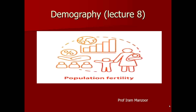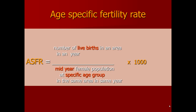Age-specific fertility rates are calculated for specific age groups of the female population. The total number of live births is placed in the numerator and the mid-year females of a specific age group in the denominator, giving us the age-specific fertility rate. When we calculate age-specific fertility rates for each age group between 15 to 49 years, we sum all of them.